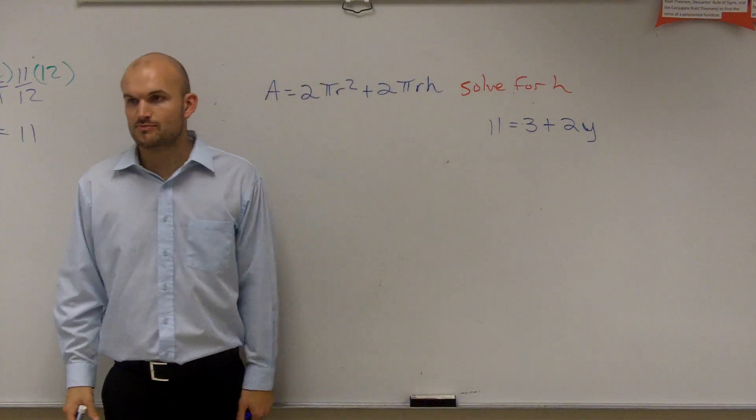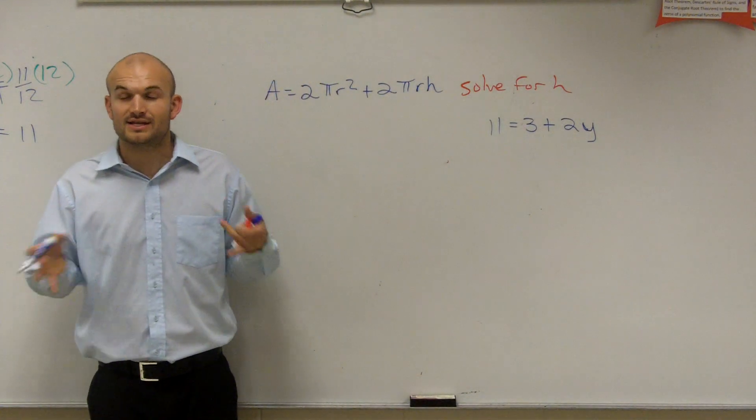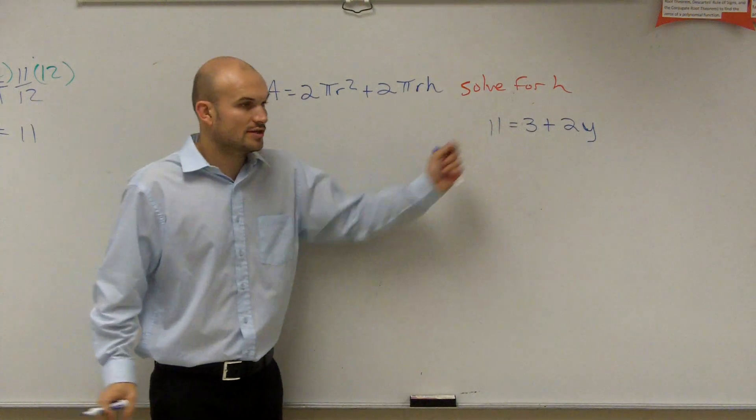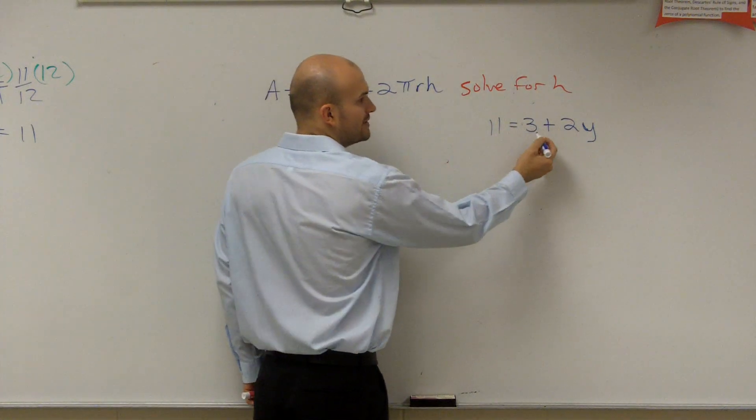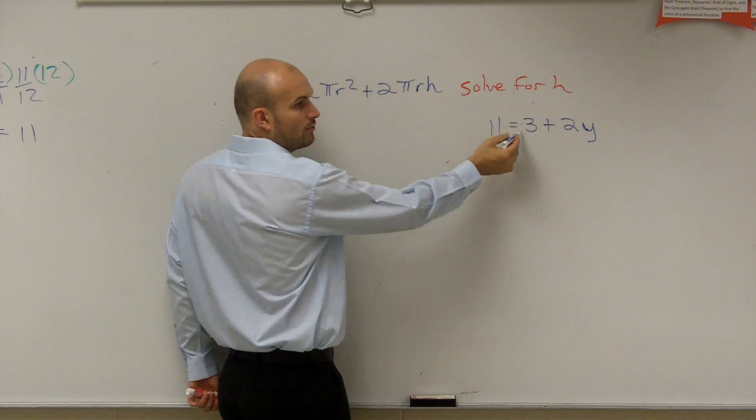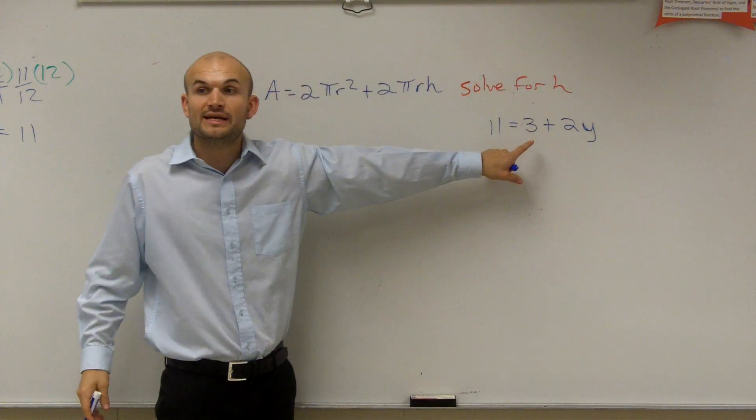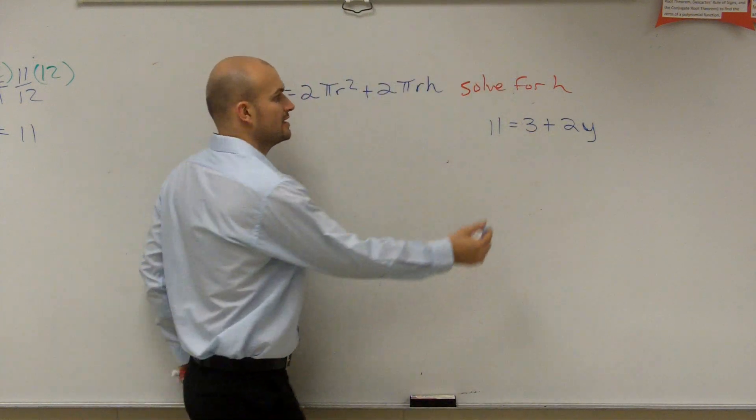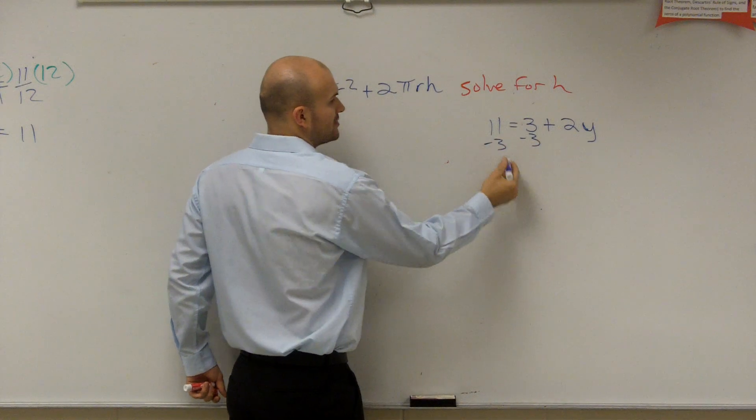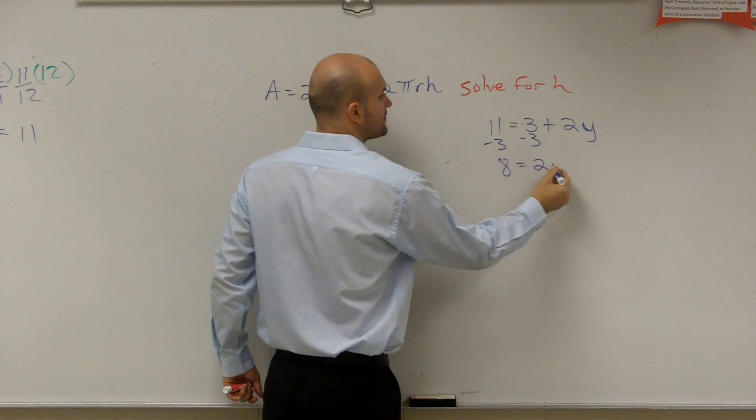If I would ask you to solve this problem for y, your main goal, right, is to get y by itself. So the first thing we do is we undo addition and subtraction. So we say, what is being added to our variable? Well, you can say that's a 3 being added because it's a positive 3. So we subtract the 3 on both sides, and we get 8 equals 2y.